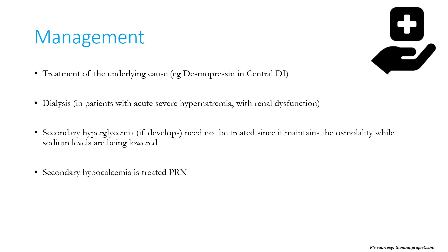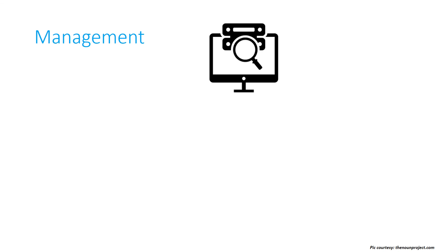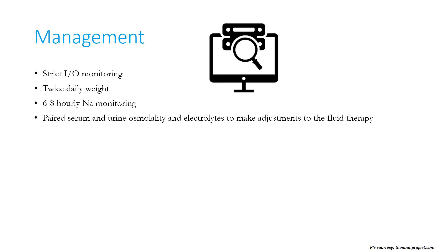Secondary hypocalcemia can occur and should be treated with IV calcium as required. Strict input-output monitoring is essential, along with twice-daily weight measurements, six-to-eight-hourly serum sodium monitoring, and paired serum and urine osmolality and electrolytes to guide adjustments to fluid therapy.